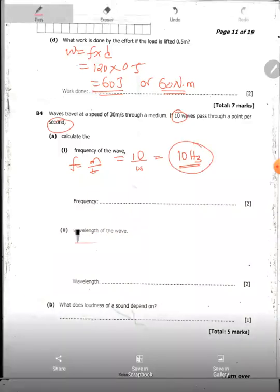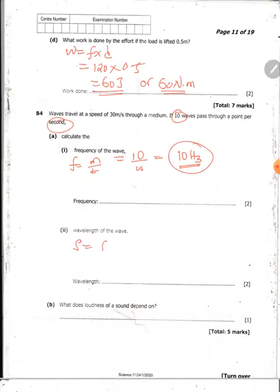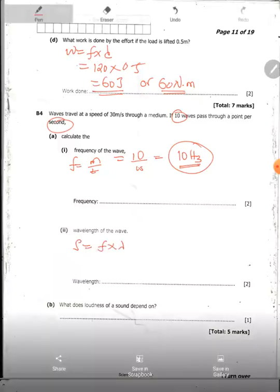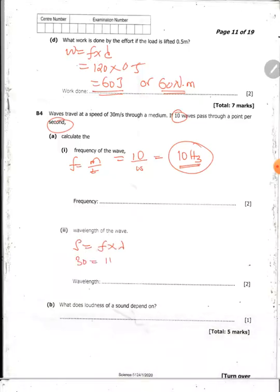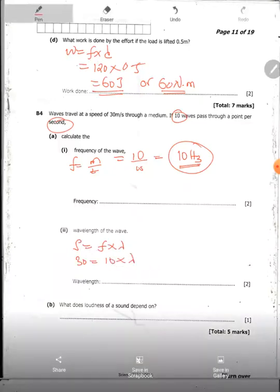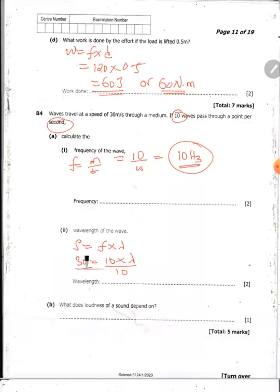Wavelength of the wave. Now we know that speed is equal to frequency times wavelength. Speed has been given to be 30 meters. Frequency we have is 10 times lambda, which is the symbol for wavelength. So divide both sides by 10. Then we're going to have lambda is equal to 3 meters. Distance should always be in meters.